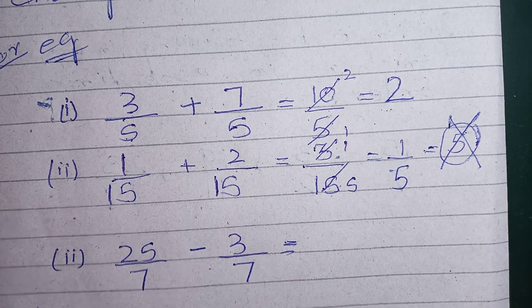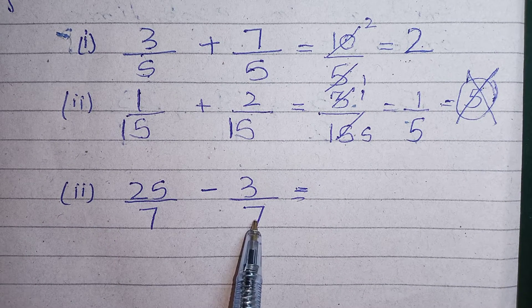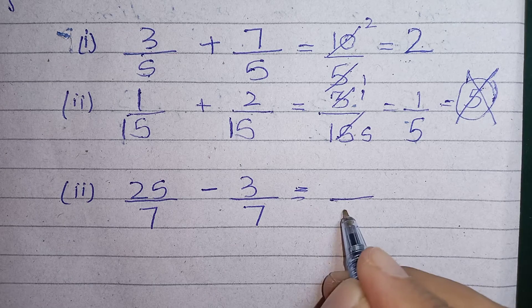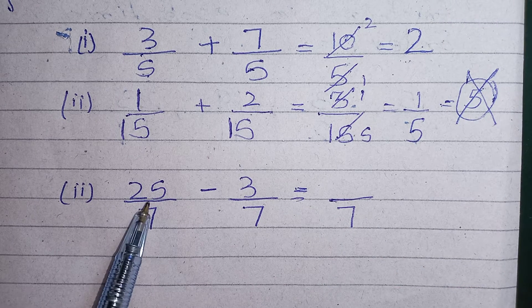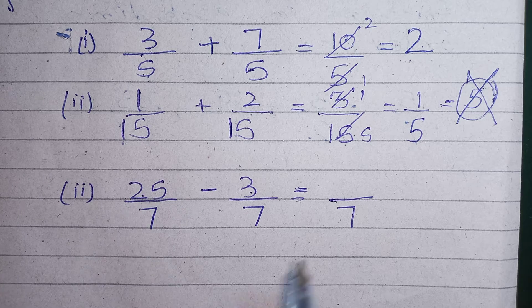Now the third. We are having 7, a common denominator keeping as it is. Now subtract 3 from 25. What you will get? 22.